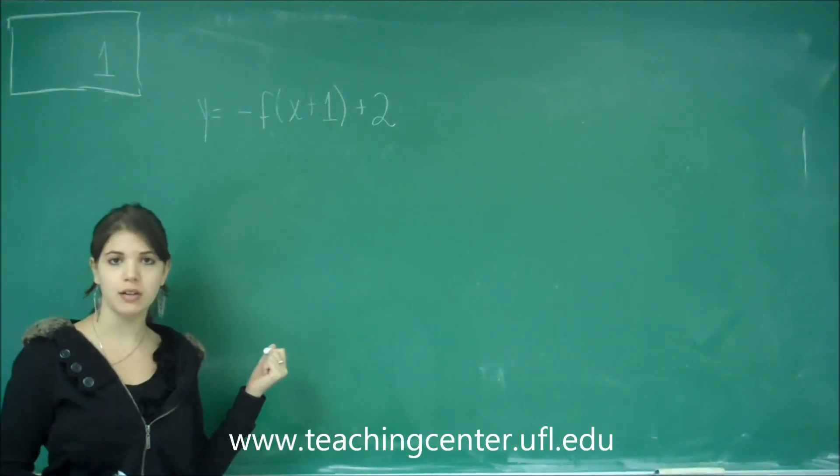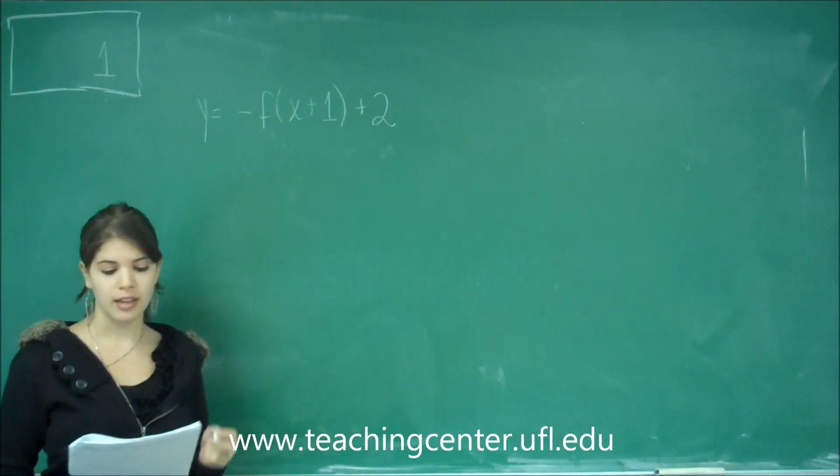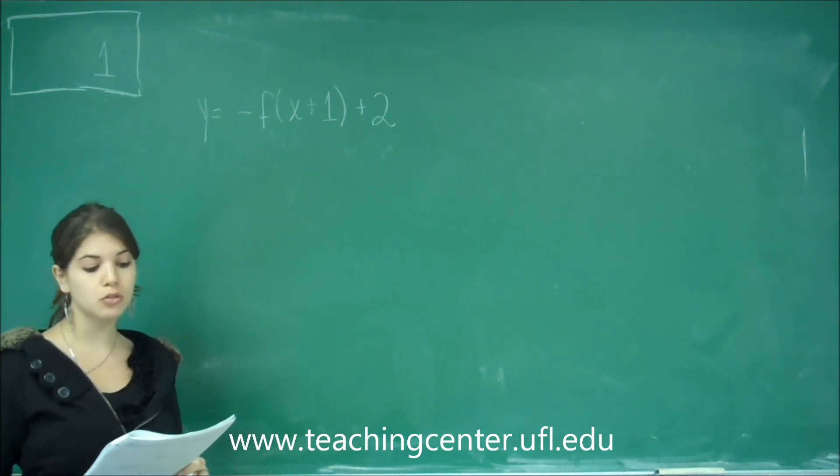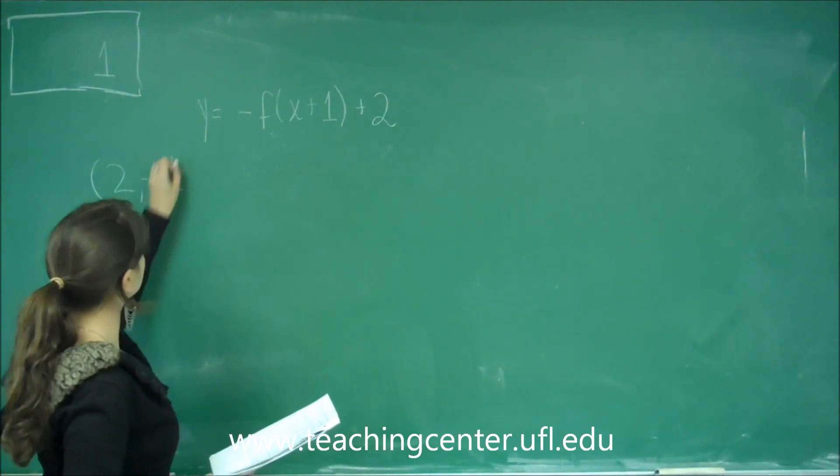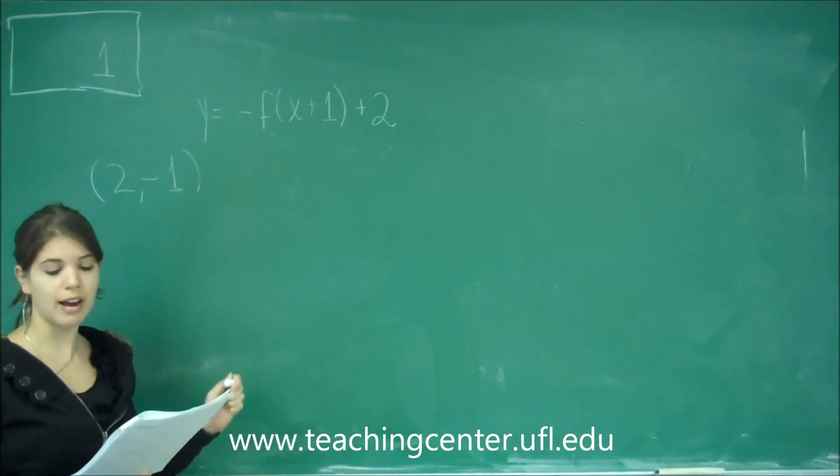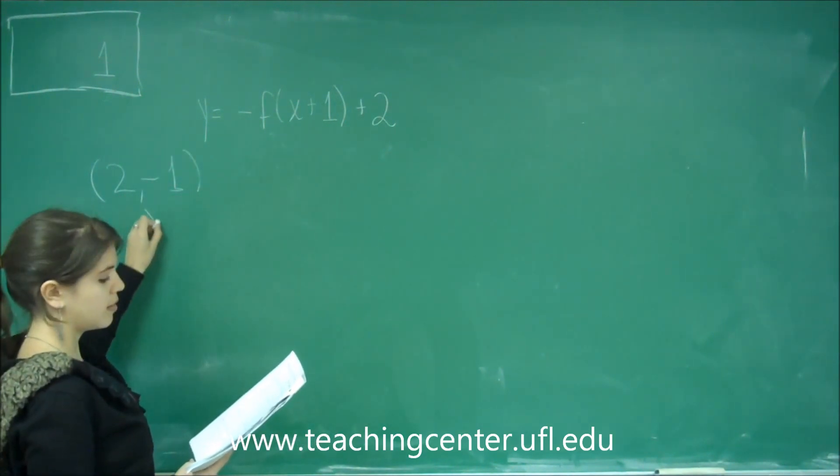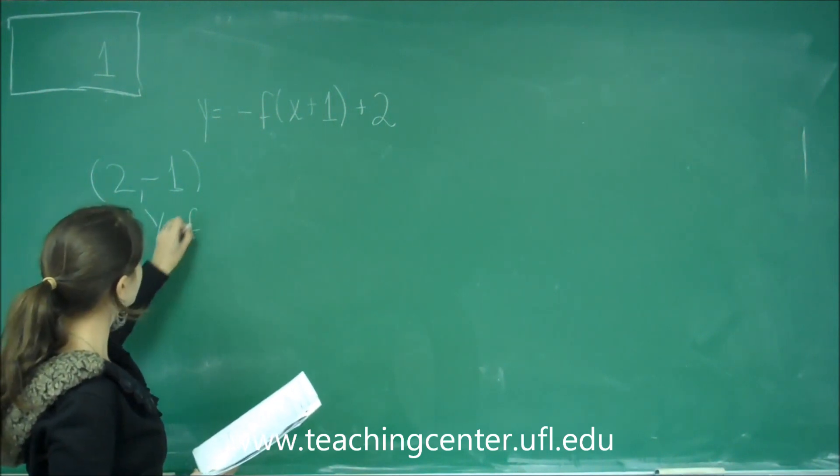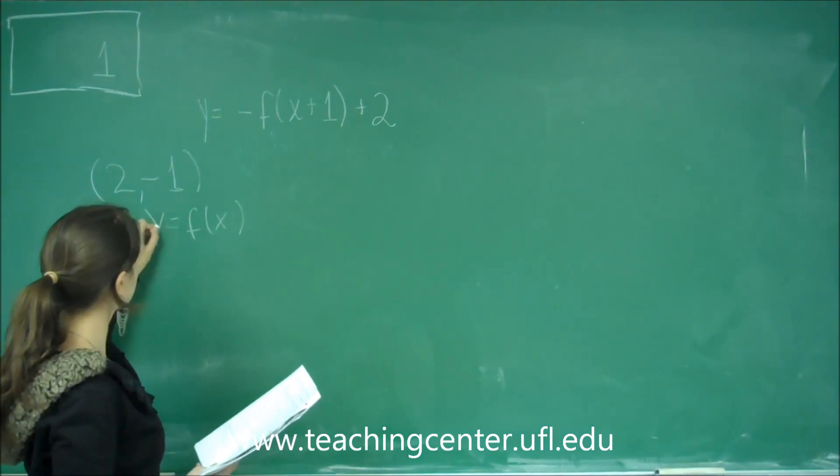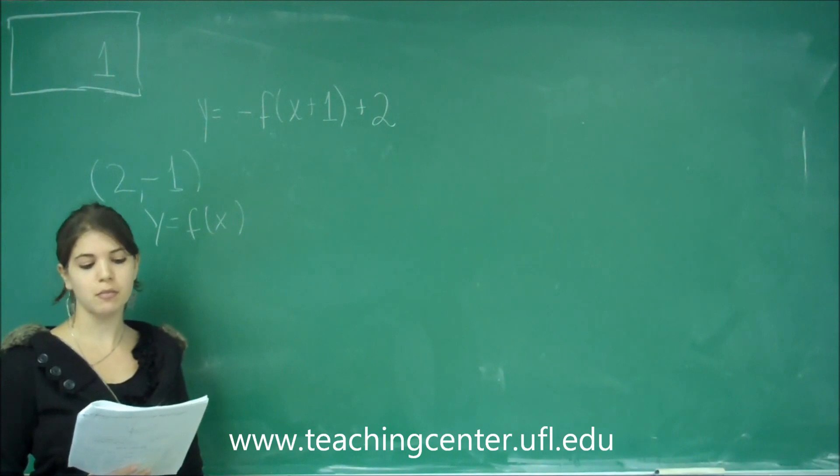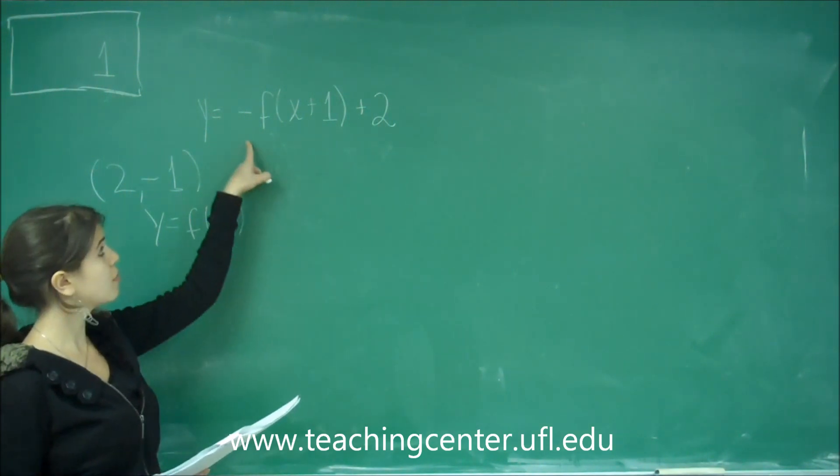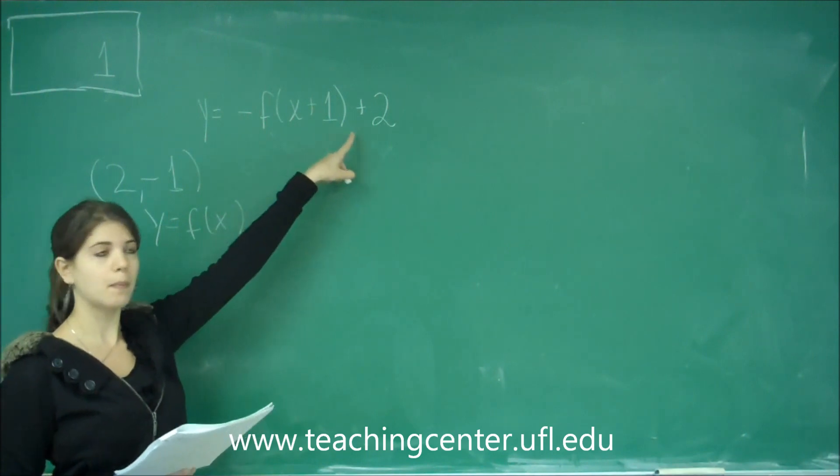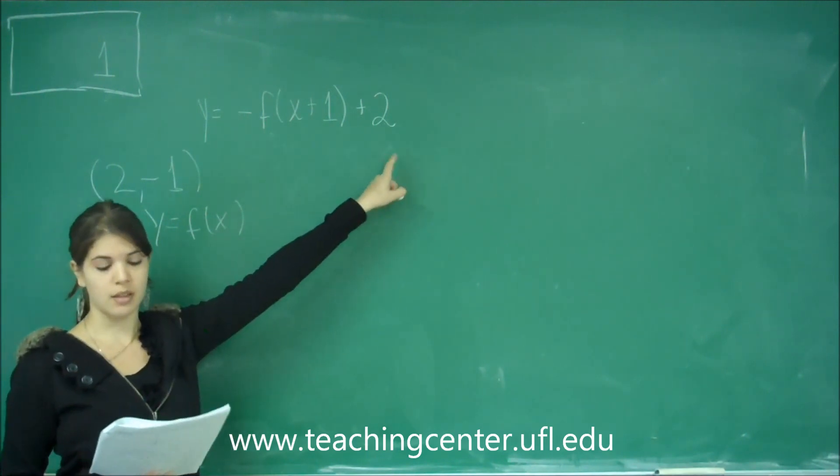So this is problem number one on the free response. It says, if the point (2, negative 1) is on the graph of y equals f of x, which point must be on the graph y equals negative f of x plus 1 plus 2? And the choices that we're given are: